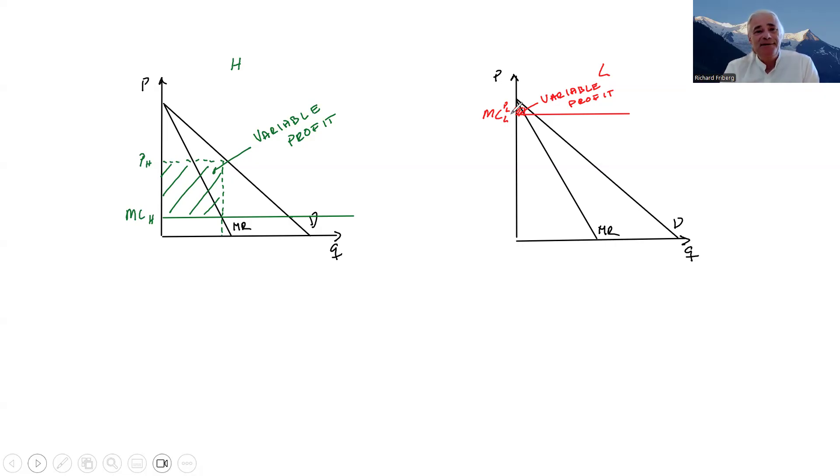So this means that in expectation, profits could be zero. The probability that you do very well is balanced by the probability that you do badly, that you get a high marginal cost draw. So let's look at that in some detail.